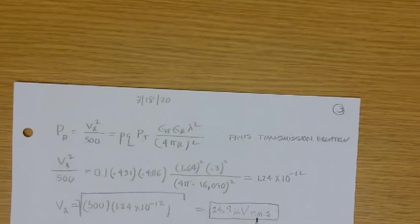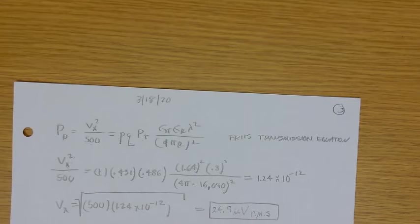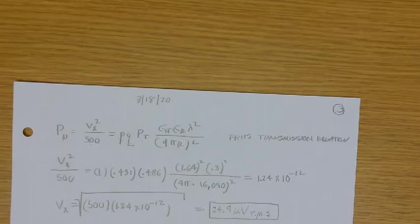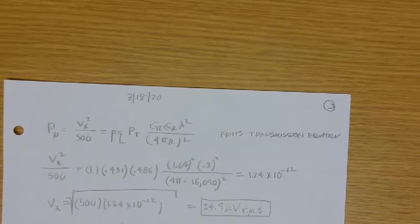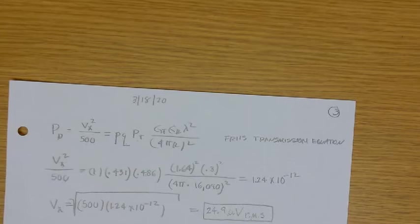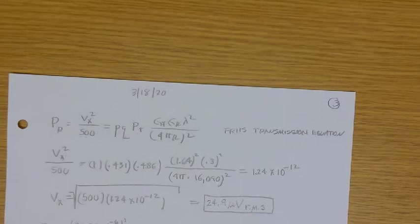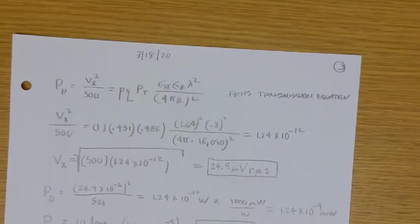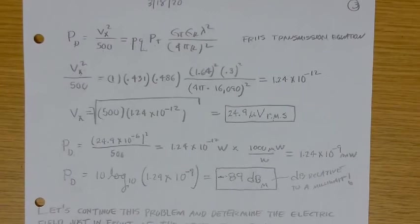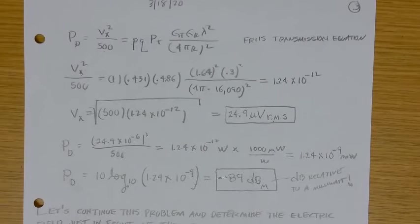So then we are now able to solve for V sub x. I computed that number. It gives us about 25 microvolts RMS. Okay? So the power delivered would be that voltage squared divided by 500, or about one and a quarter nanomilliwatts, I guess. And so the power delivered in dB would be 10 log of that. And so that's minus 89 dBm, dB relative to a milliwatt. So that would be the normal way that that would be represented. Obviously, I didn't push this down. So if you have to bear with me, roll it up, or I could zoom out, I guess. Okay? So you can follow it there.